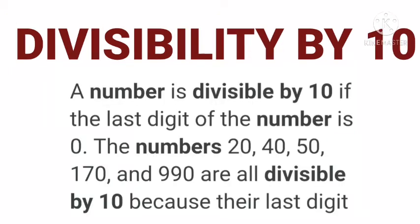A number is divisible by 10 if the last digit of the number is 0. The numbers 20, 40, 50, 170, and 990 are all divisible by 10 because their last digit is 0.